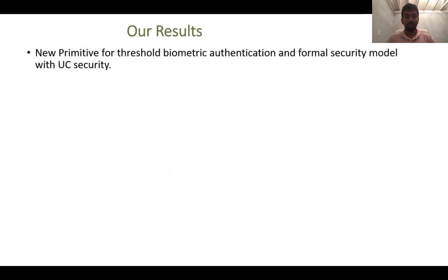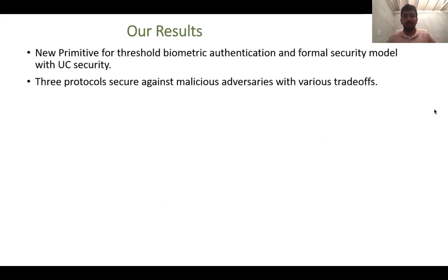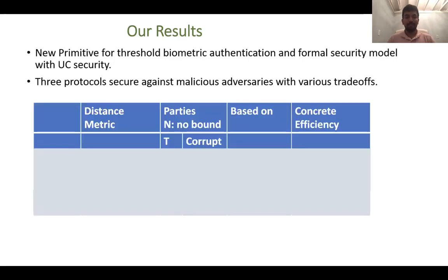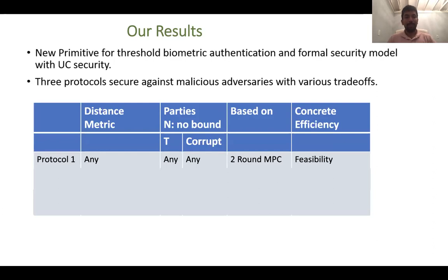So what are the results we obtain in this work? We define a new primitive for threshold biometric authentication and formalize security using a standard simulation-based definition with universal composable security. We then designed three protocols secured against malicious adversaries with this UC secure definition, and these three protocols have various trade-offs amongst each other. The first protocol works for any distance metric. In all three protocols, there is no bound on the number of parties in the system. In the first protocol, the threshold t can be anything less than n, and the number of corrupt parties can be anything less than t.